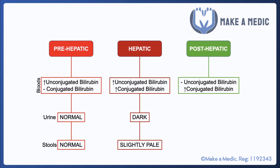Finally, with post-hepatic jaundice, caused by an obstruction in the biliary tree, the unconjugated bilirubin level should be normal as there's been no change in red blood cell breakdown or the liver's ability to conjugate. However, conjugated bilirubin may seep back into the circulation, raising blood conjugated bilirubin levels. Since conjugated bilirubin is water soluble and pigmented, urine will be dark. And since conjugated bilirubin isn't reaching the GI tract, there's no conversion to urobilinogen or stercobilin, resulting in very pale stools and urine negative for urobilinogen.